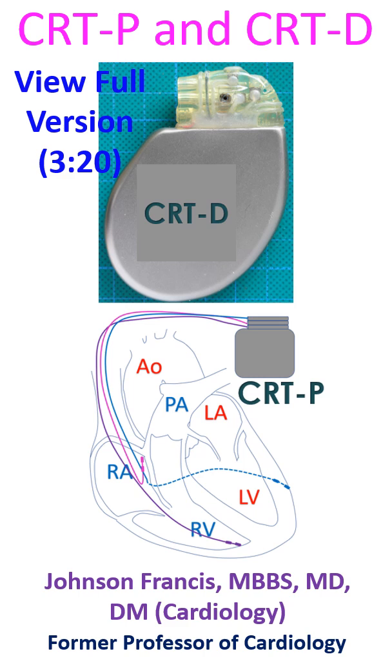CRT is a type of pacemaker in which three chambers of the heart are paced: the right atrium, right ventricle, and left ventricle.